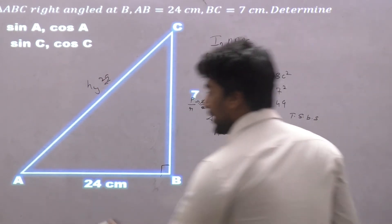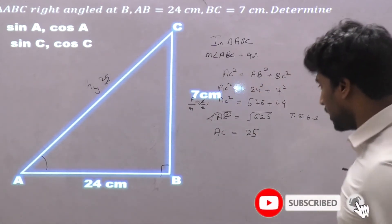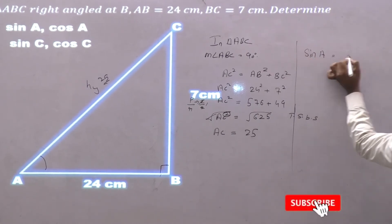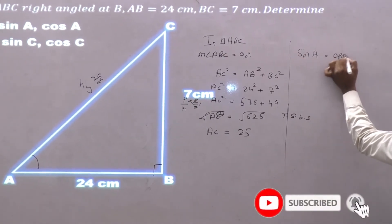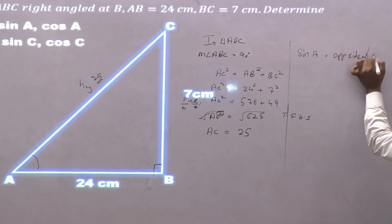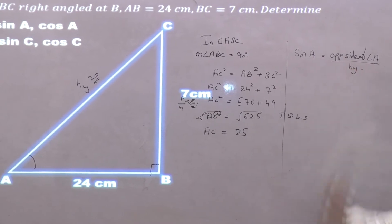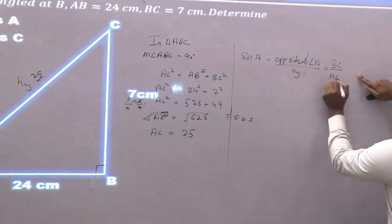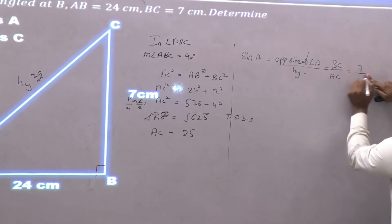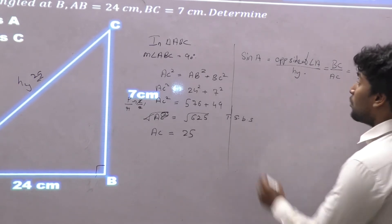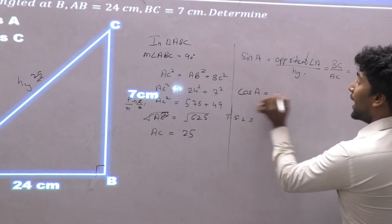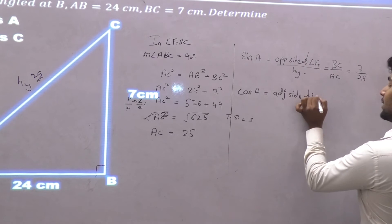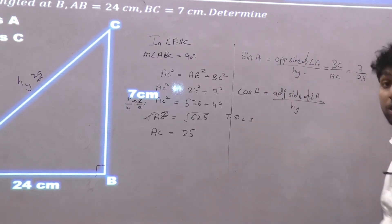Now solving sin A and cos A. Sin A is the opposite side of angle A upon hypotenuse. The opposite side of angle A is BC, and the hypotenuse is AC. So sin A equals BC upon AC. BC is 7 and AC is 25, so sin A equals 7 upon 25. Now for cos A —